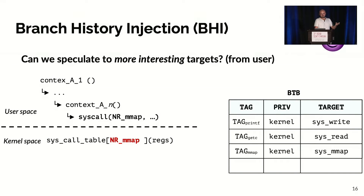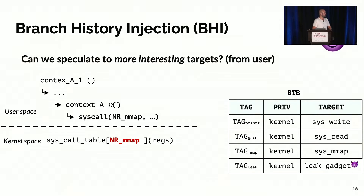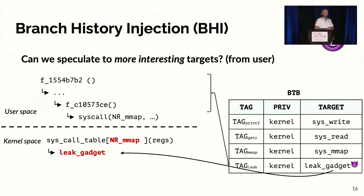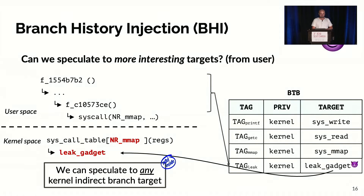We went back to our experiment and set up an interesting target: a leak gadget function in the kernel that is not one of the valid targets of the syscall table handler. By simply shuffling around the jump history in user space — generating random jump chains — we asked: can we make the syscall table's indirect jump go to this leak gadget? By brute-forcing the jump history, we found we actually can. This means we can speculate to any kernel indirect branch target regardless of which indirect jump we're attacking. This works on Intel specifically, and is quite interesting for exploitation.